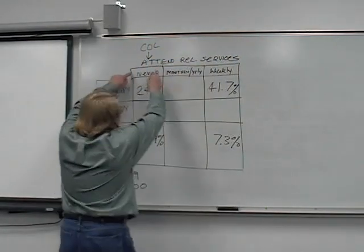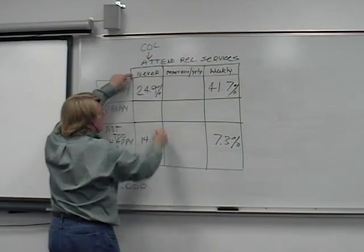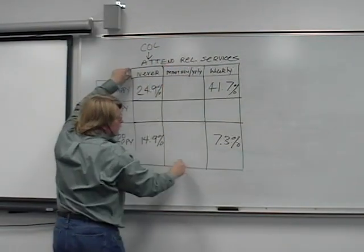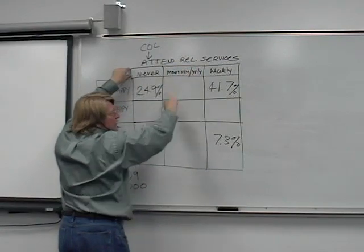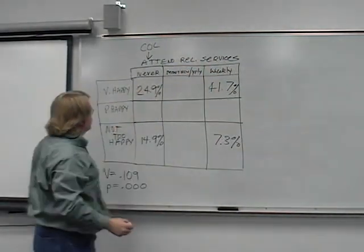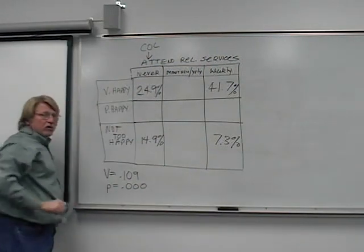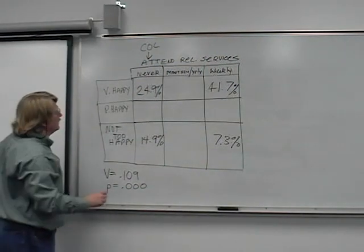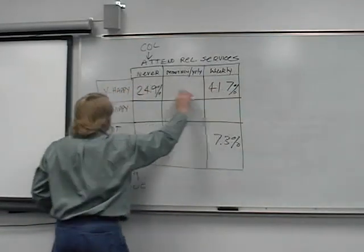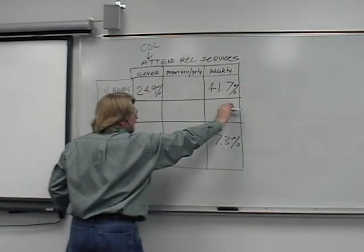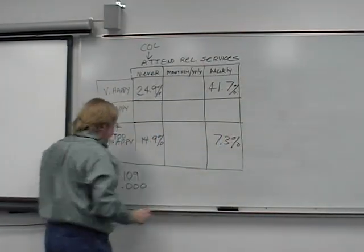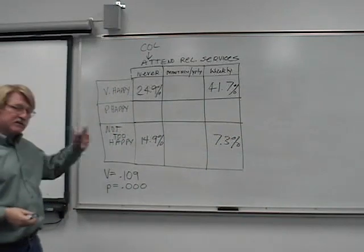And so we have the column of never attend religious services. Notice columns like columns in front of a church, or in front of a bank building. Monthly or yearly, and I've left those blank for a reason I'll explain here in a moment. And a column of weekly attending religious services. We have rows, which are always considered the dependent variable across tab data, or the result variable. And this is very happy across here. Pretty happy, which I left blank for our purposes. I'll tell you why in a minute. And not too happy across here.